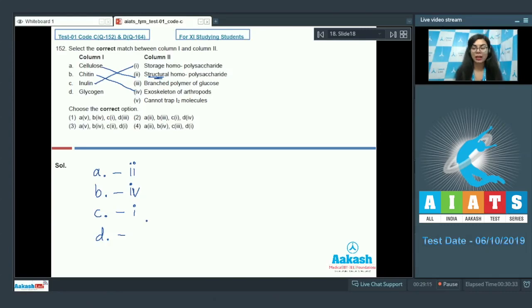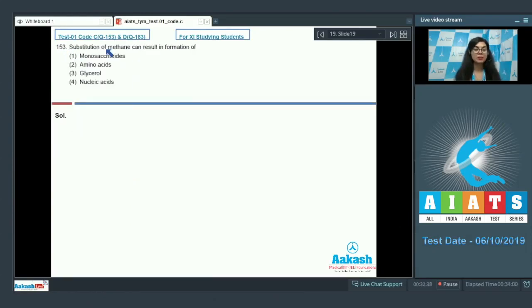Glycogen is made up of about 30,000 glucose residues and shows a branching structure with alpha-1,4 linkages. Thus option D would go with three. Looking at the fifth option, cannot trap iodine molecules, cellulose does not have any complex helices which can trap iodine, so this is correct for A as well. Looking at the combination A5, B4, C1, and D3, the correct answer would be option number one.